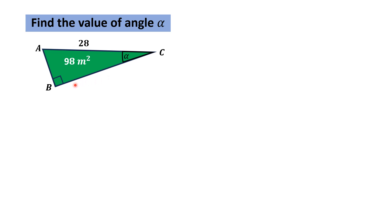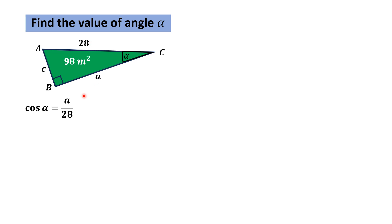First of all, we take the cosine of the angle. So cos(theta) is equal to base over hypotenuse, and the base is the side of the triangle which is adjacent to the angle. In this given triangle, BC is the base, which we call lowercase a, and the altitude as lowercase c. Then cos(alpha) equals a divided by the hypotenuse, that is 28 units. From here, a equals 28 times cosine of alpha.